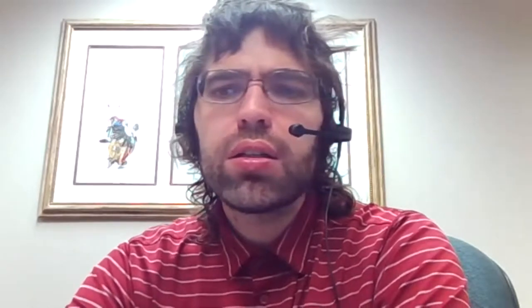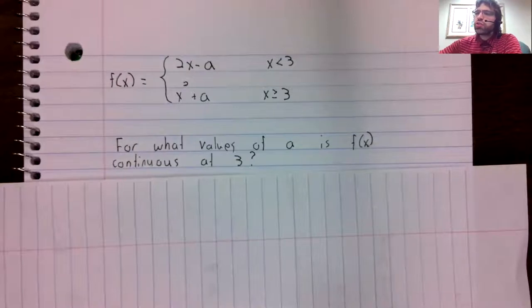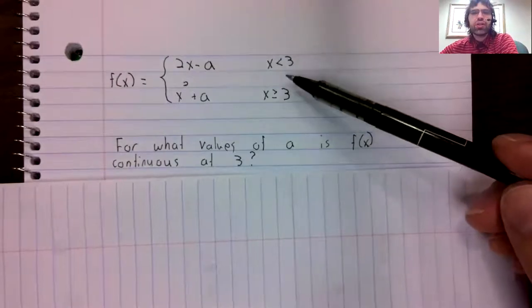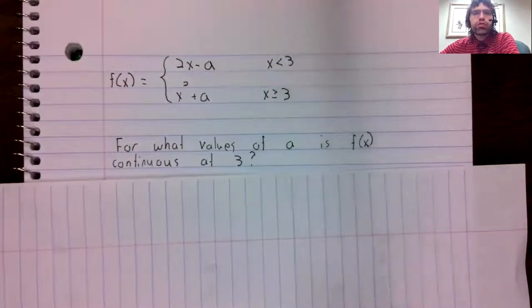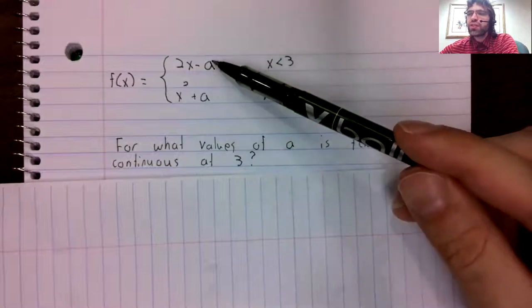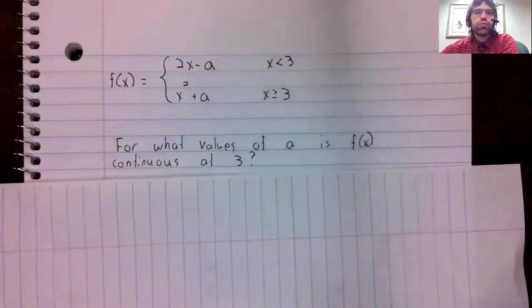So we'll review continuity, but we'll also review one-sided limits. In particular, I'm going to give you a piecewise defined function involving an unknown constant A. And this function switches pieces at three, and I'm going to try to make this function be continuous at three by selecting appropriate values of A.